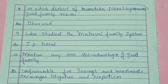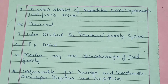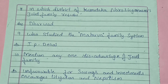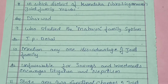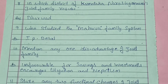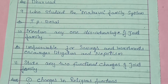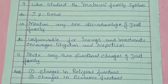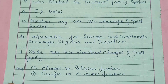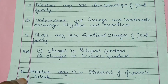The next question is: in which district of Karnataka does the Narsing Hana Wars joint family reside? The answer is Dharwad. Who studied the Mahua family system? The answer is I.P. Desai. Mention any one disadvantage of joint family: unfavorable for savings and investment, and increase in litigation and nepotism.